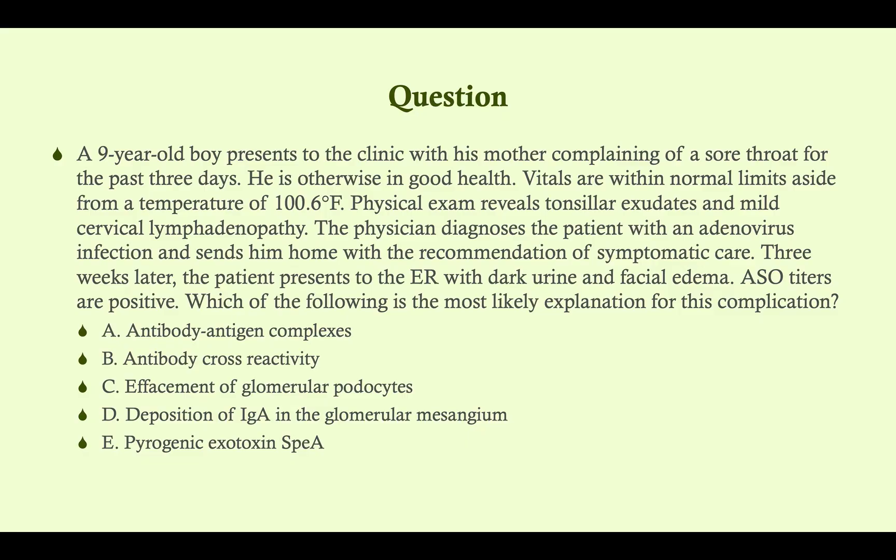Practice question: A nine-year-old boy presents with a three-day sore throat. Temperature is 100.6°F; exam reveals tonsillar exudates and mild cervical lymphadenopathy. The physician diagnoses adenovirus and sends him home with symptomatic care. Three weeks later he presents with dark urine and facial edema; ASO titers are positive. Which of the following is the most likely explanation? A) antibody-antigen complexes, B) antibody cross-reactivity, C) effacement of glomerular podocytes, D) deposition of IgA in the glomerular mesangium, or E) pyrogenic exotoxin SPEA.